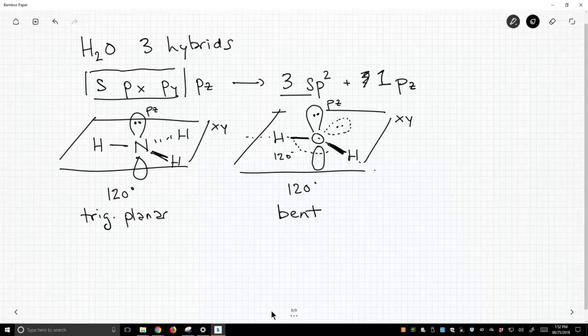And so this is if water were sp² hybridized, which is a possibility. Then we'd say it has a bond angle of 120°, and the geometry itself is bent.